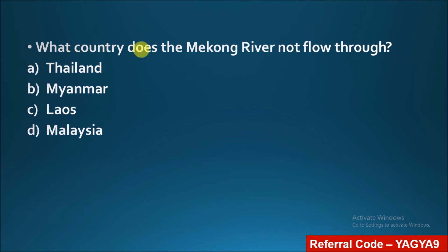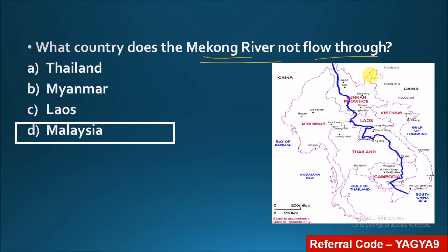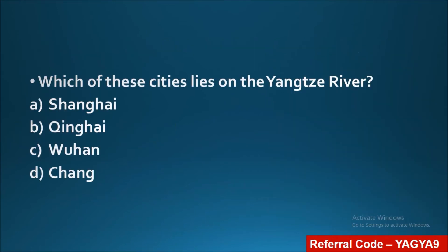Next question: which country does the Mekong River NOT flow through? Options: Thailand, Myanmar, Laos, Malaysia. The correct answer is Malaysia. As we saw, the Mekong flows through China, Myanmar, Laos, Thailand, Vietnam, and Cambodia — so Malaysia is not one of them.